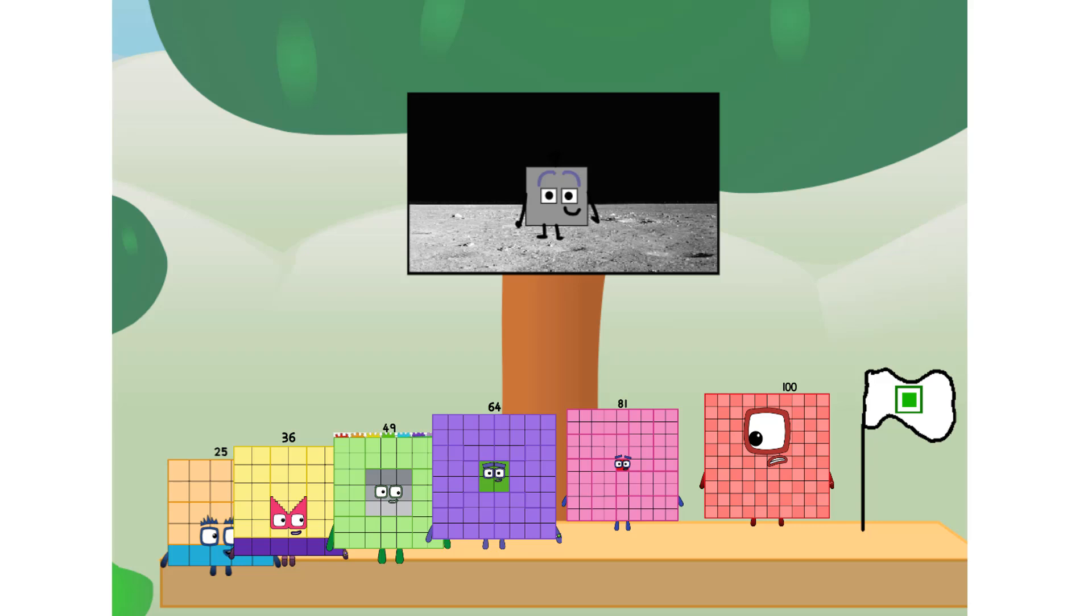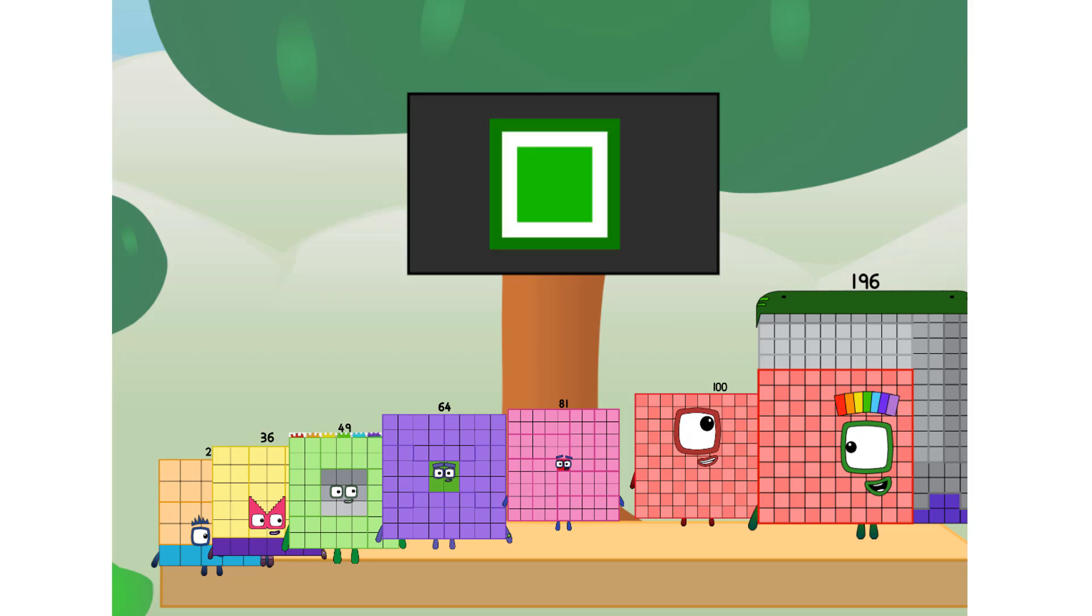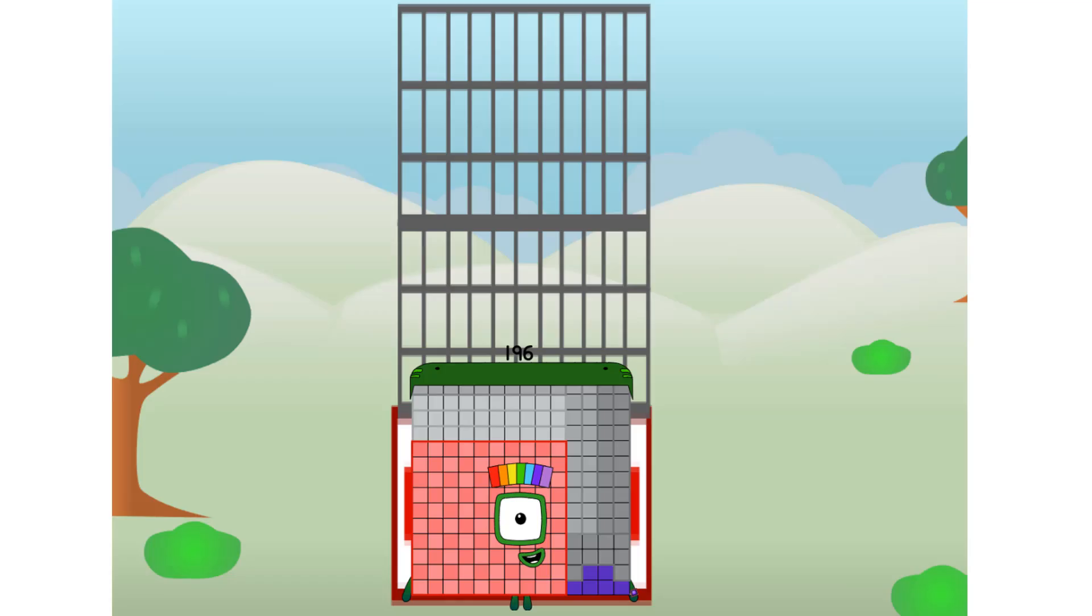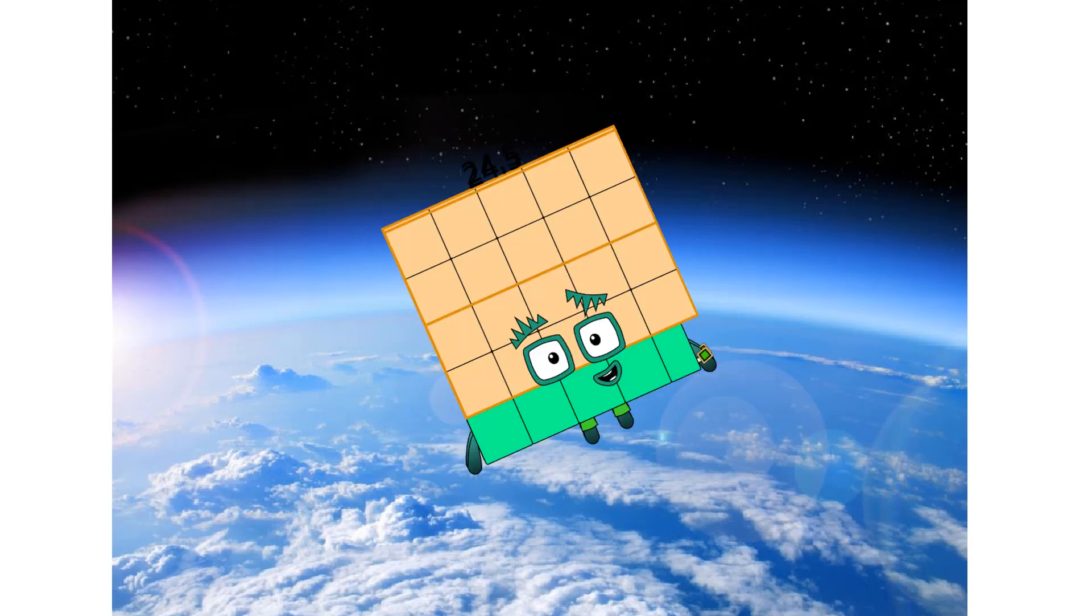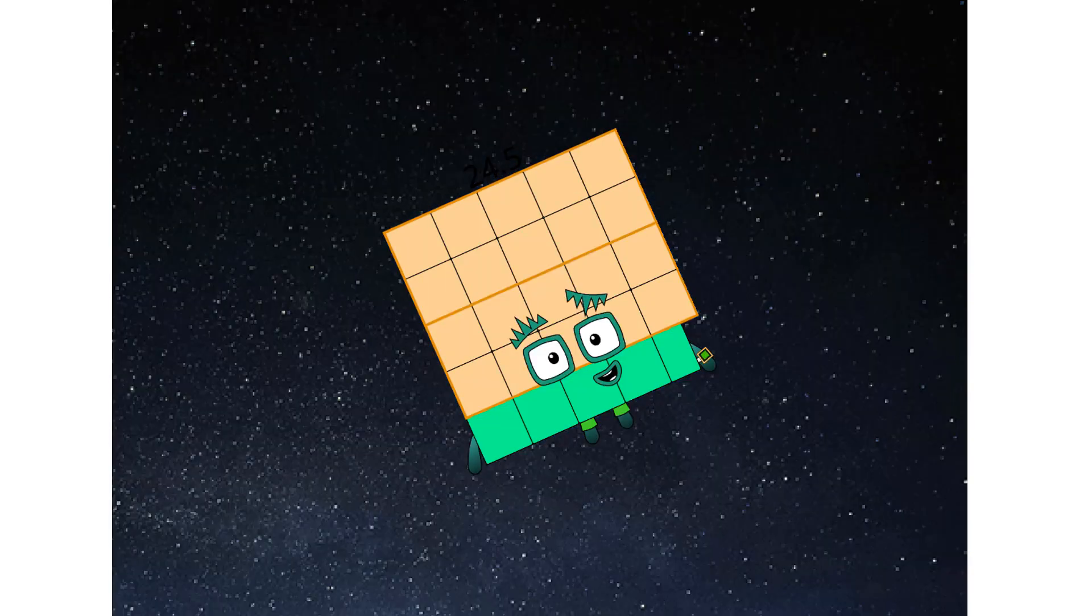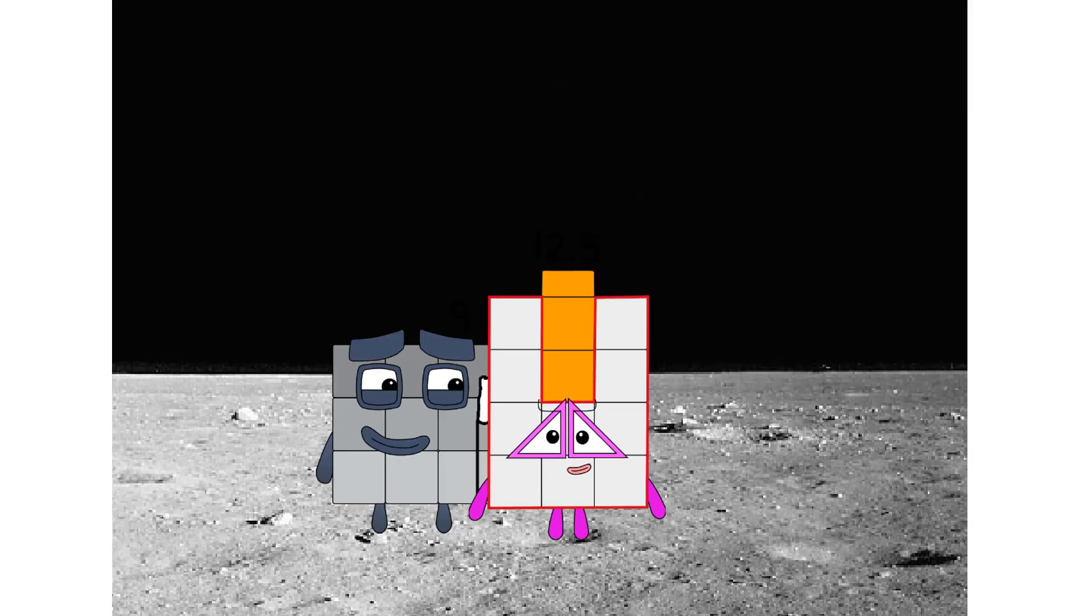We did it. The only thing left now is to plant the square club flag. Number land, we got one big problem. I forgot the flag. Don't worry little nine. I'll take care of this. 196. And I promise. No rockets. Doubles only. Hello, looking for this?